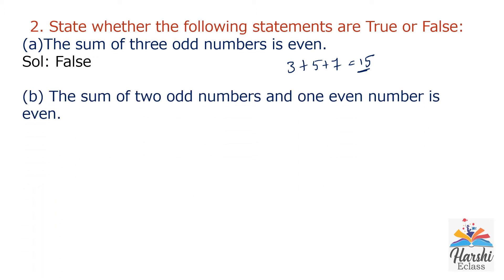Statement B: The sum of two odd numbers and one even number is even. Let's check: 3 plus 7 plus 2. 3 plus 7 is 10, and 10 plus 2 is 12. It is an even number, so it is true.